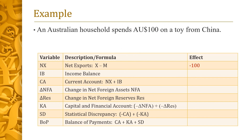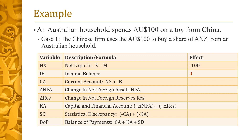We now turn to an extended example. Throughout this example, we will assume that an Australian household spends $100 AUD on a toy from China. This transaction lowers NX by $100. We will study three cases, which differ in terms of what the Chinese firm does with the $100. In case 1, the firm uses the $100 to buy a share of ANZ from an Australian household. This share pays no dividends in the current year, so the effect on the income balance IB is zero. The effect on CA is thus minus 100 — the sum of the effects on NX and on IB. Since Australians' holdings of foreign assets have not changed but foreigners' holdings of Australian assets have risen by 100, delta NFA is minus 100.